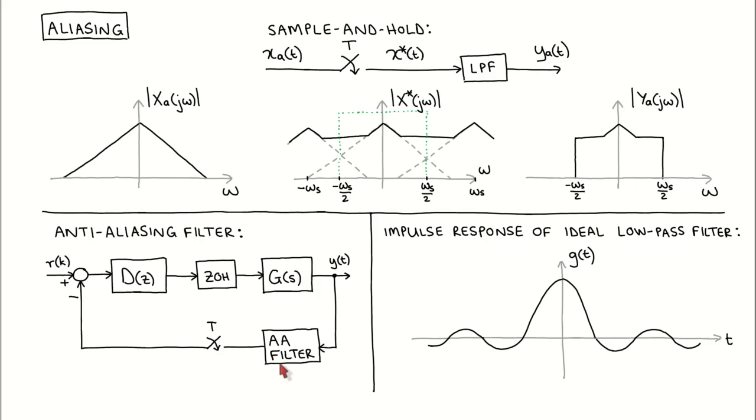Ideally, one would use an ideal low-pass filter with a cutoff frequency equal to the Nyquist frequency. However, an ideal low-pass filter is not realizable, since its impulse response is non-causal, as shown here on the right.